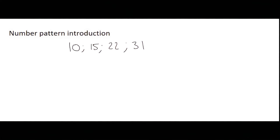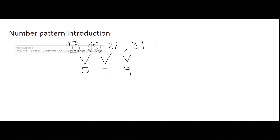At first glance it's not always clear whether it is a quadratic number pattern, but what we do is look at the difference. When finding the difference, be sure to always use the value to the right minus the value to the left, not the other way around. So 15 minus 10 is 5, 22 minus 15 is 7, and 31 minus 22 is 9.